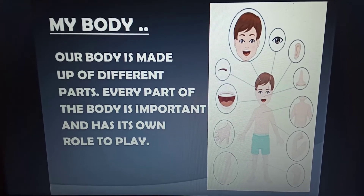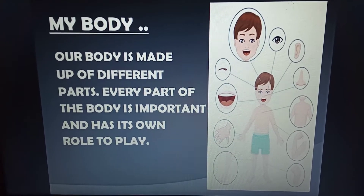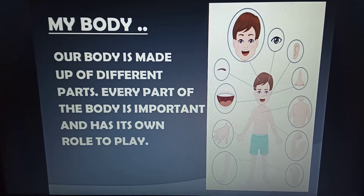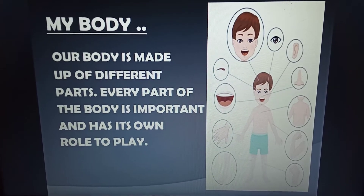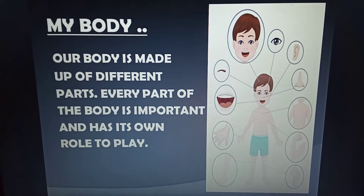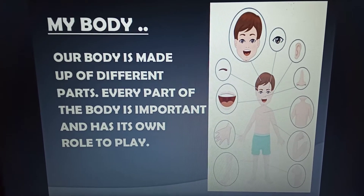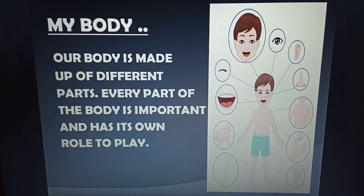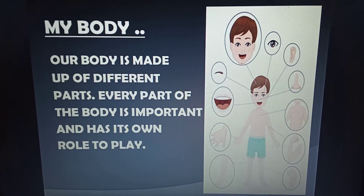Here in the picture we can see various body parts. Along with this we have the functions of different body parts. For example, the eyes help us to see, whereas the hands help us to hold things.